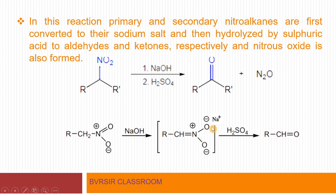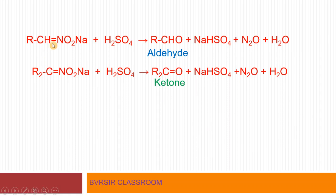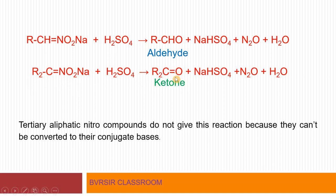In the Nef reaction, the sodium salt of the primary nitroalkane (RCH=NO2⁻ Na⁺) is hydrolyzed by sulfuric acid. The primary nitroalkane gives aldehyde (RCHO) plus N2O as a byproduct. Similarly, the secondary nitroalkane under the same reaction conditions gives a ketone. An important note: tertiary aliphatic nitro compounds do not give this reaction because they cannot be converted to their conjugate bases. Only primary and secondary nitroalkanes participate in this reaction.